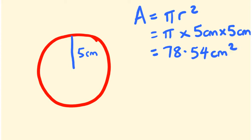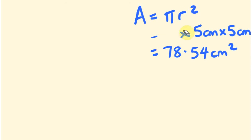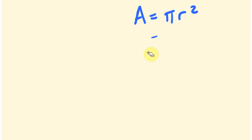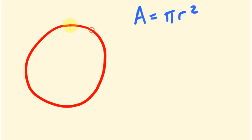That's how easy it is to work out the area of a circle, but it's really critical that you remember this formula. Let's try another one — this time I'll give you one with a diameter. Remember, the diameter is twice the size of the radius. I'll draw a circle where the diameter all the way across is 18 meters.